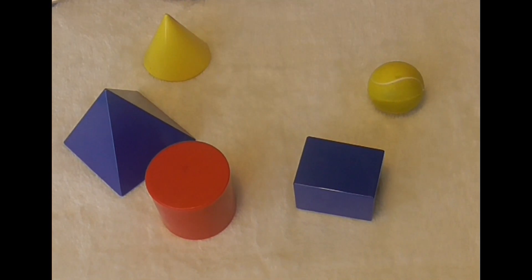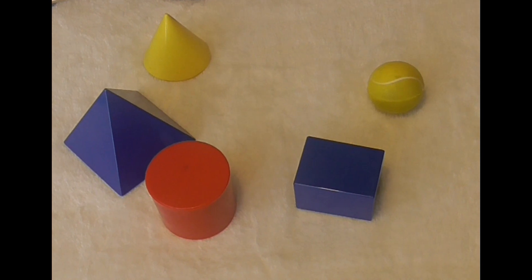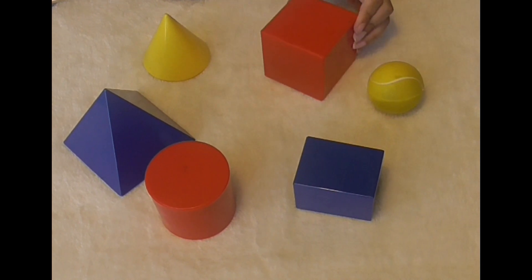What shape have I taken away now? 5, 4, 3, 2, 1. That's right, it was the cube.